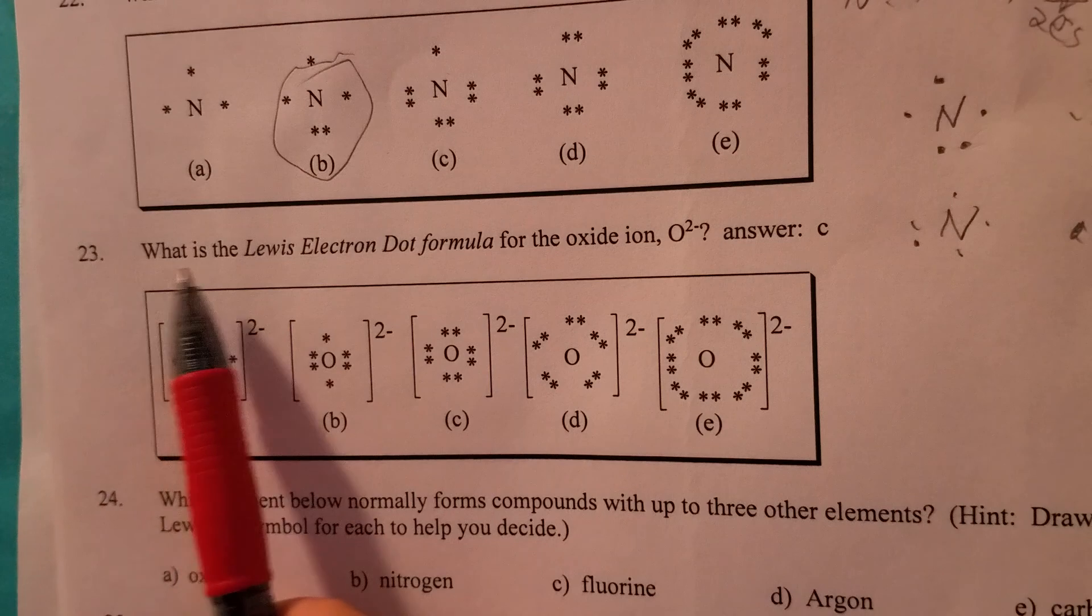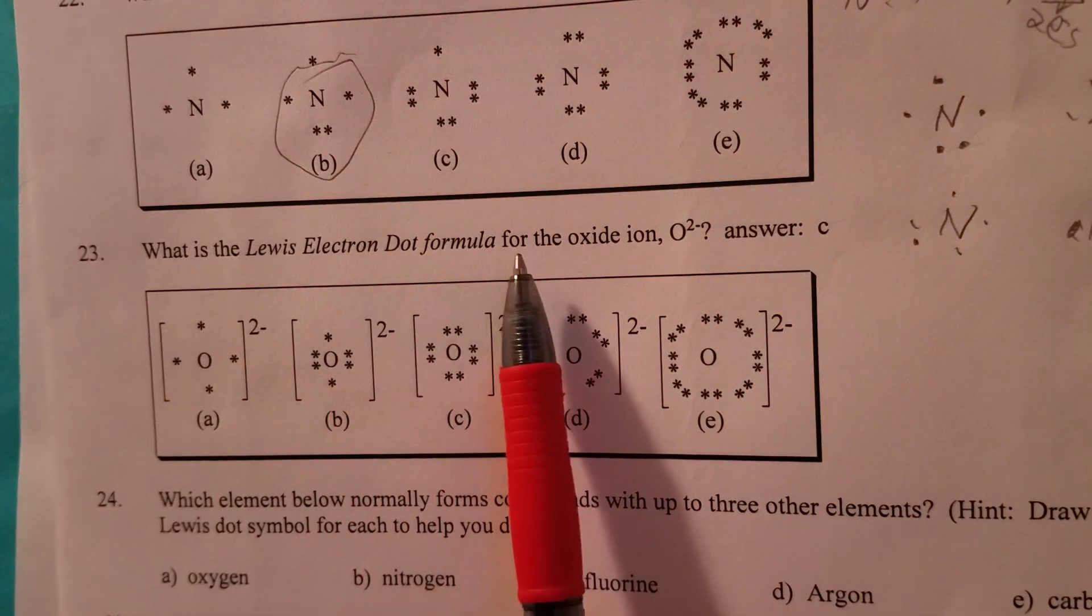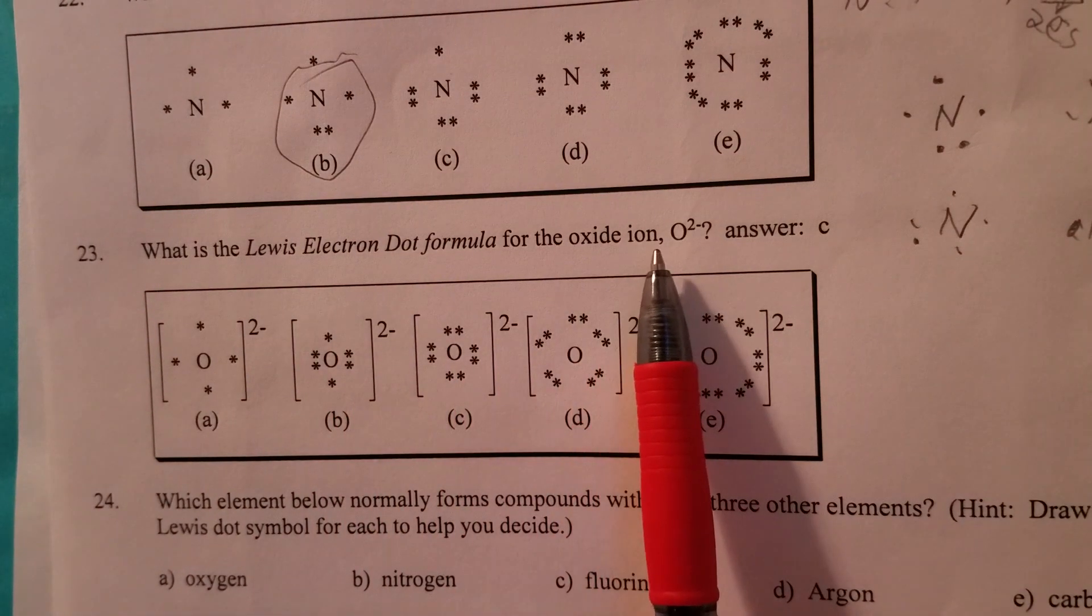Question number 23, what is the Lewis electron dot formula for the oxide ion, O²⁻?